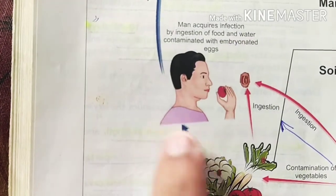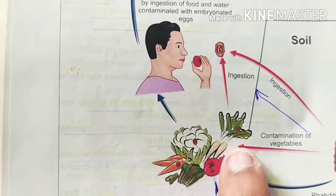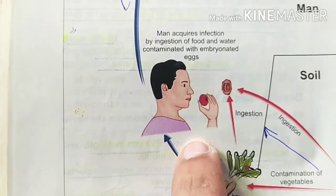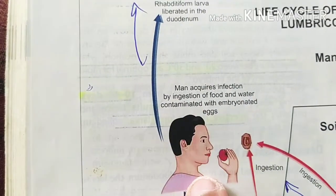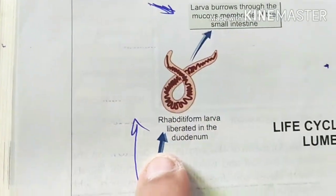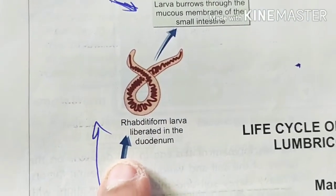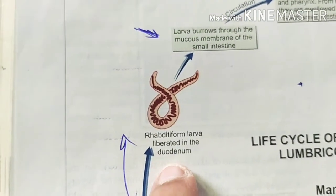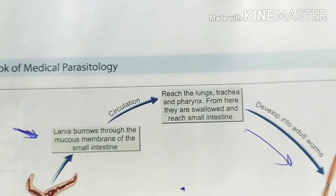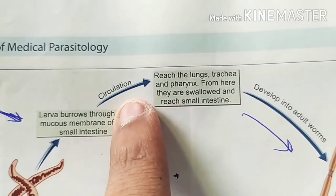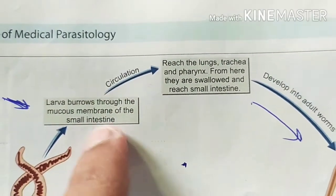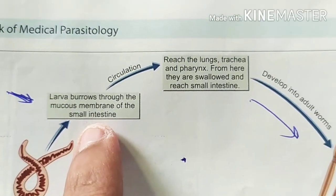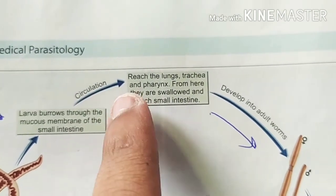Ascaris lumbricoides is acquired from contaminated food and water — mainly soil, fruits, and vegetables. The larva, known as the Rhabditae form larva, is liberated in the duodenum. It then makes a burrow in the small intestine and enters the circulation.